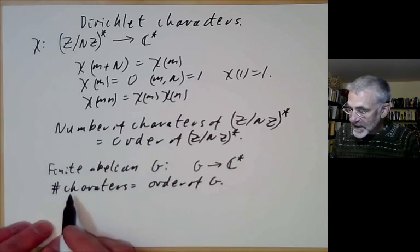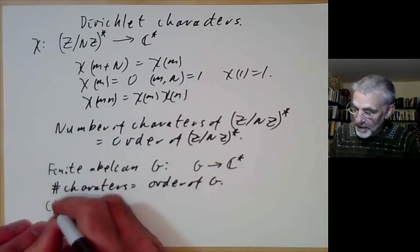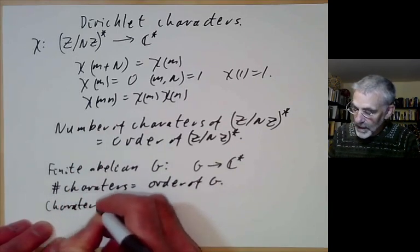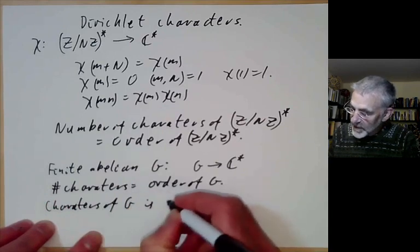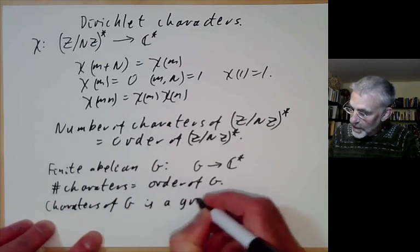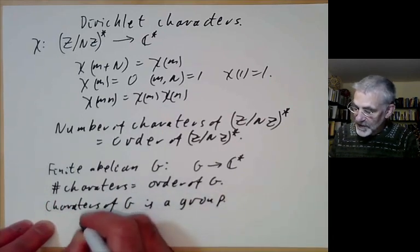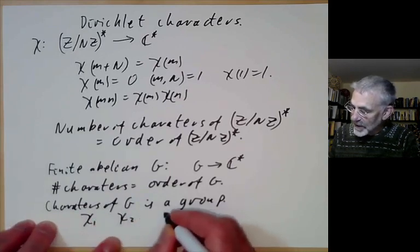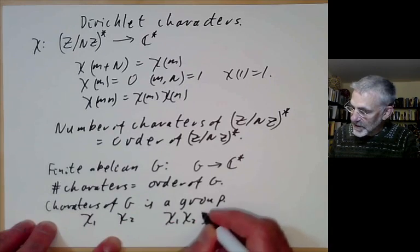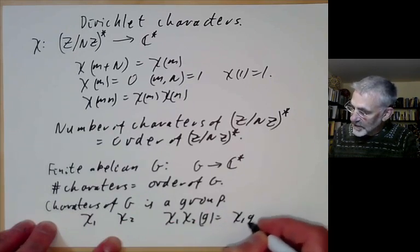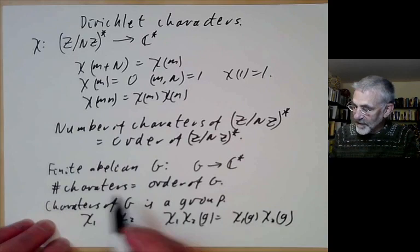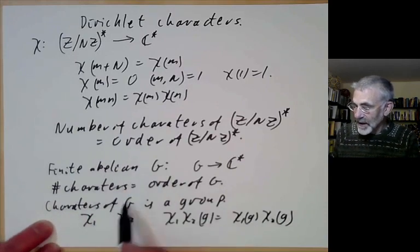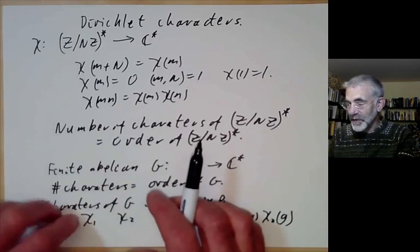In fact, the set of characters of G is itself a group, because we can define the product of two characters: if we've got chi1 and chi2, we define chi1 chi2 of g to be chi1 of g times chi2 of g. So for any finite abelian group, we get a new group called the character group.